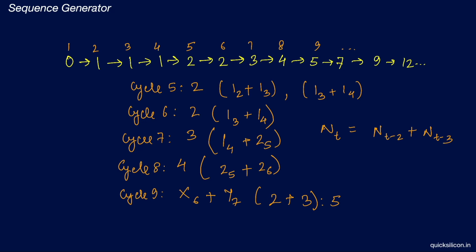Now that we understand the pattern and need to access information up to t-3 cycles back, the design would simply consist of a set of flops which would store the information for t-1, t-2, and t-3 cycles. We would also need an adder to help us generate the next number in the sequence.